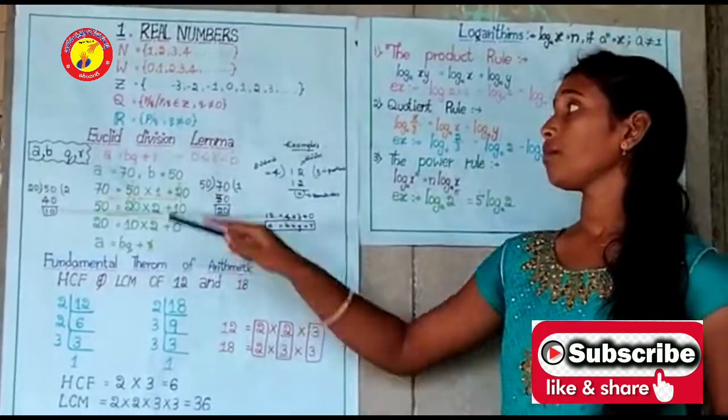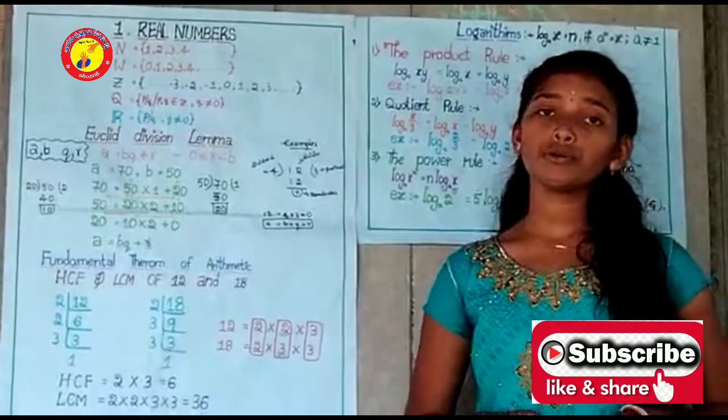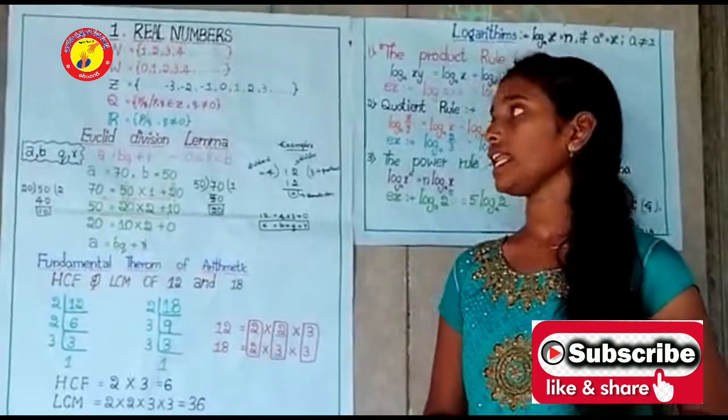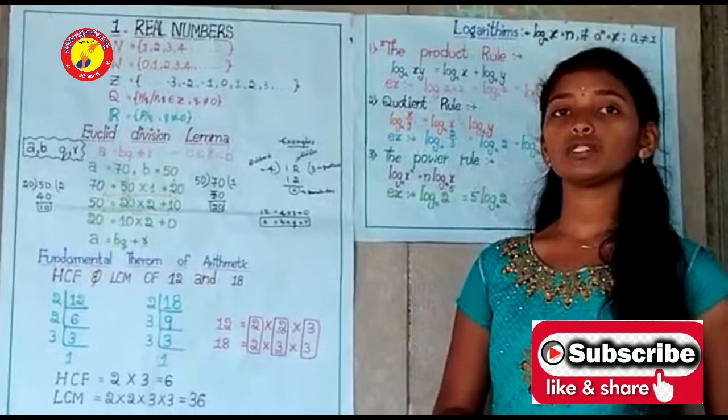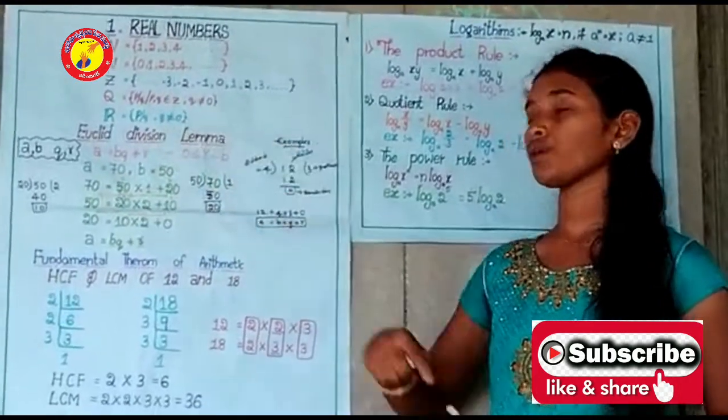Rational numbers means the numbers in the form of p/q where p and q are integers and q is not equal to zero. Real numbers means the numbers which can be expressed in the form of p/q where q is not equal to zero.